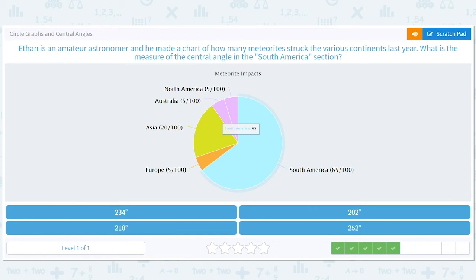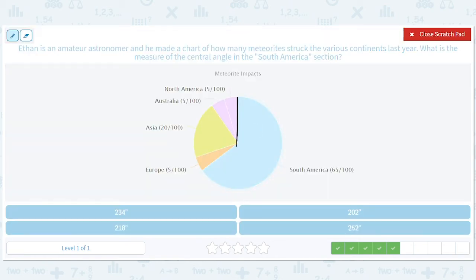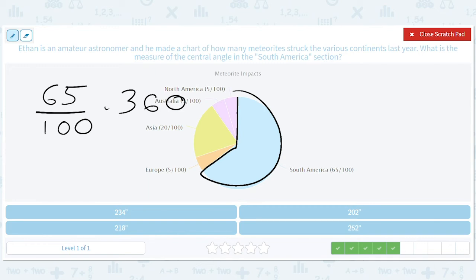The South America section. Ooh, South America section. All right. So that's 65 out of 100 times 360. And I guess we'll just do this, right? So let's divide the top and the bottom here by 5. So if we divide the bottom here by 5, we get 20. If we divide the top by 5, we get 13. So 13 out of 20 times 360.